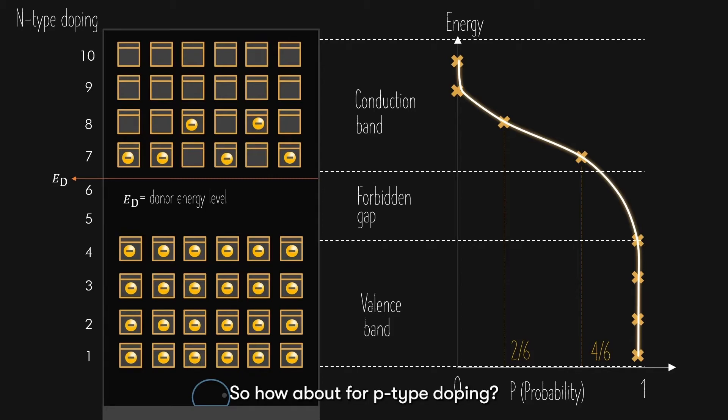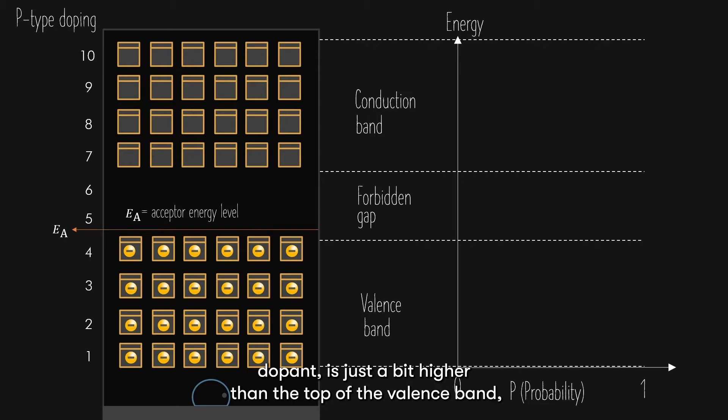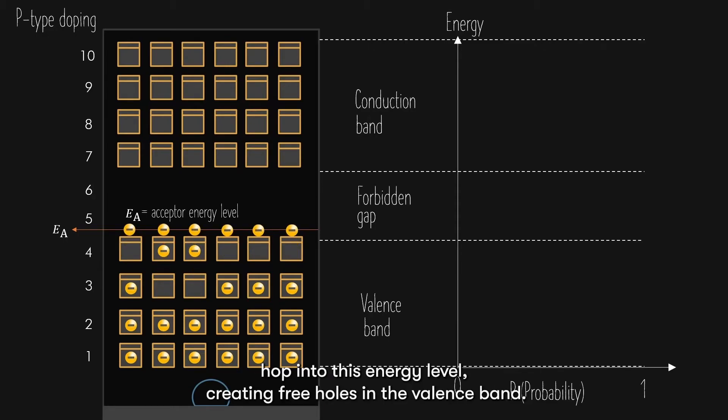So, how about for p-type doping? In p-type semiconductors, the same concept applies, except this time, the accepted energy level of the p-type doping is just a bit higher than the top of the valence band. I would say at the hypothetical 4.5th floor. At room temperature, the electrons in the valence band can very easily hop into this energy level, creating three holes in the valence band.